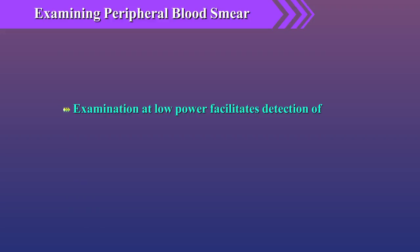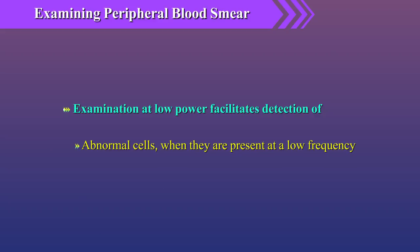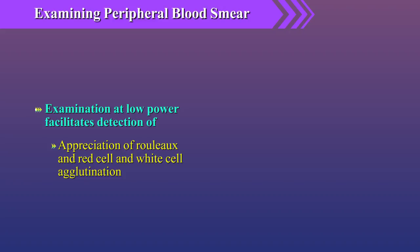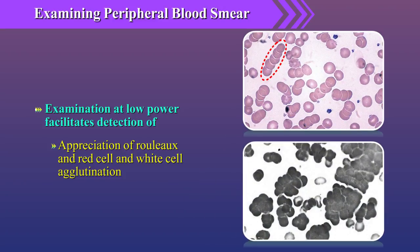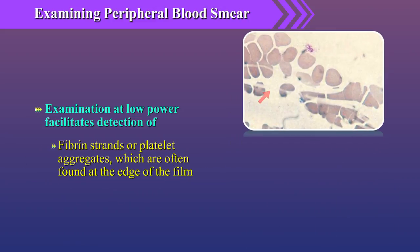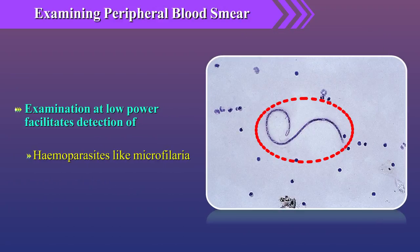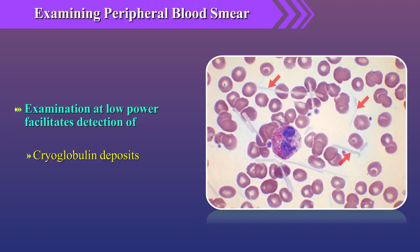Examination at low power facilitates detection of abnormal cells when present at low frequency, appreciation of rouleaux and red cell and white cell agglutination, fibrin strands or platelet aggregates which are often found at the edge of the film, and hemoparasites like microfilaria or cryoglobulin deposits.